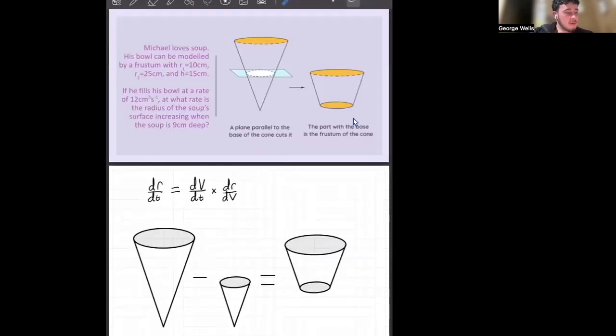Michael loves soup. His bowl can be modeled with a frustum, which is essentially you've got a big cone minus a little cone gives you the frustum. And we are also given that the bottom radius is equal to 10 centimeters, the top as 25, and a height as 15 centimeters.